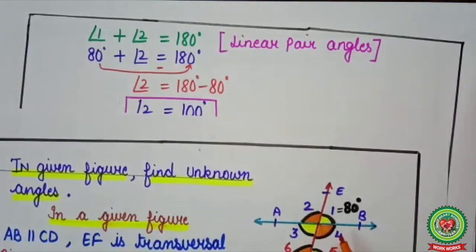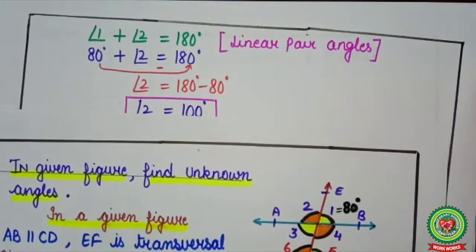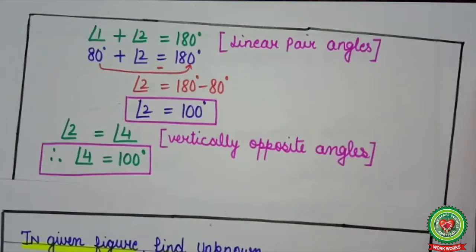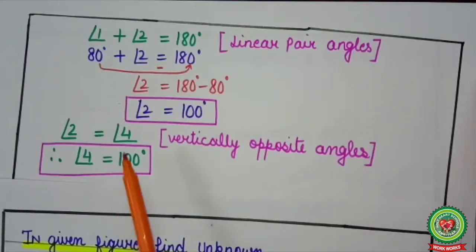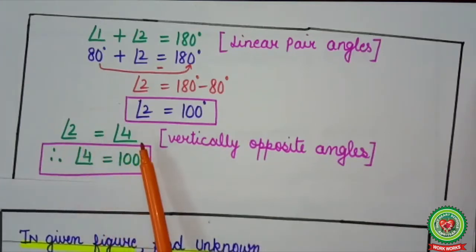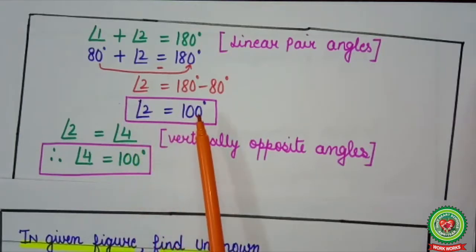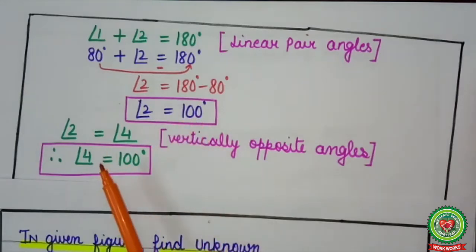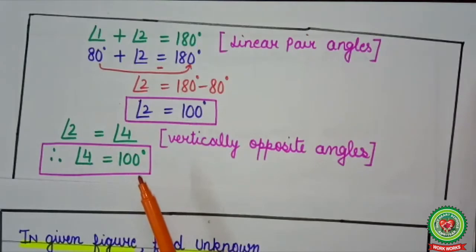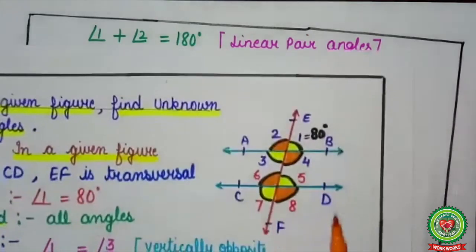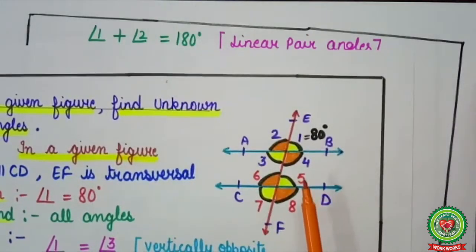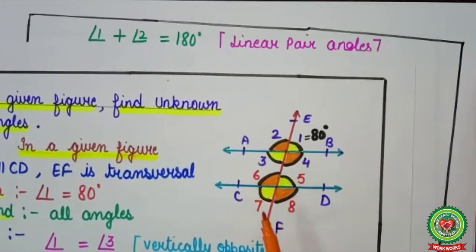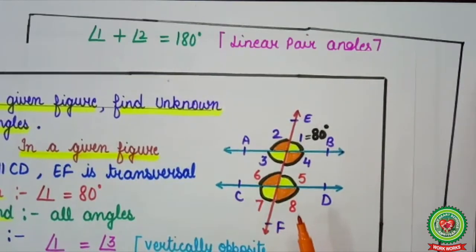Now angle 2 and angle 4 are again vertically opposite angles, and vertically opposite angles are equal. Therefore, angle 2 equals angle 4. So if angle 2 is 100 degrees, then angle 4 is also equal to 100 degrees. Now next we have to find out angle 5, angle 6, angle 7, and angle 8.